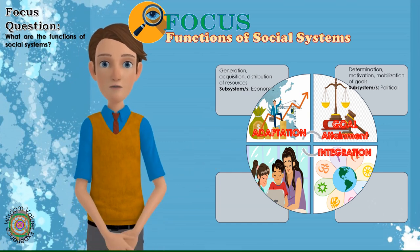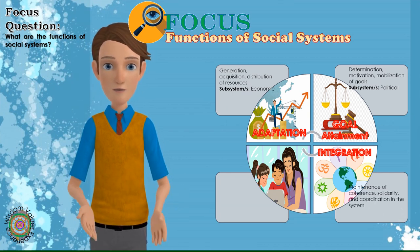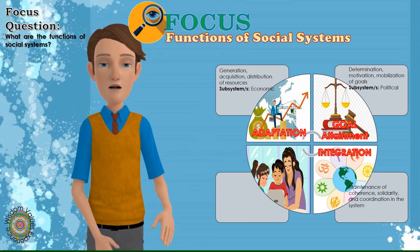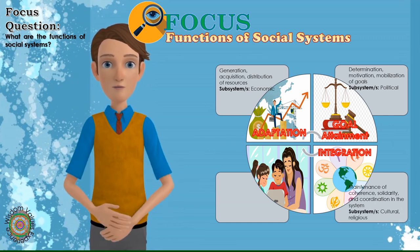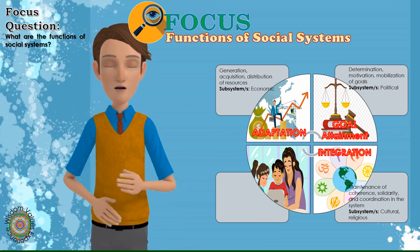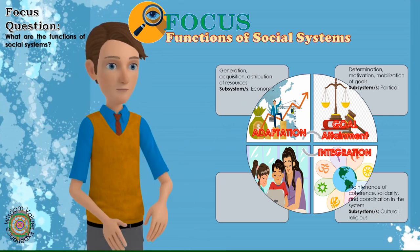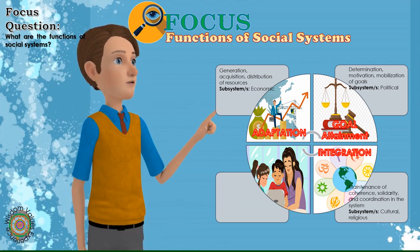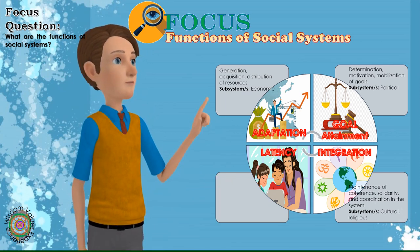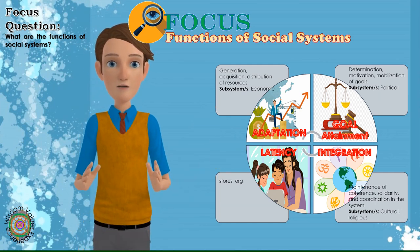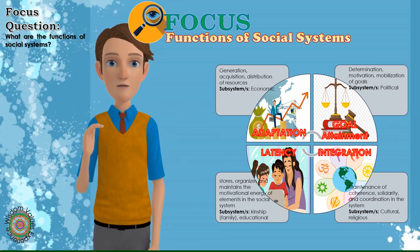3. Integration: Integration is that functional prerequisite which helps to maintain coherence, solidarity and coordination in the system. In the social system this function is mainly performed by culture and values. Therefore, the cultural system and its associated institutions and practices constitute elements of integration. Integration ensures continuity, coordination and solidarity within the system; it also helps in safeguarding the system from breakdown or disruption. This functional prerequisite is internal to the system and has a consummatory character. 4. Latency: Finally, latency is that functional prerequisite of the social system which stores, organizes and maintains the motivational energy of elements in the social system. Its main functions are pattern maintenance and tension management within the system.